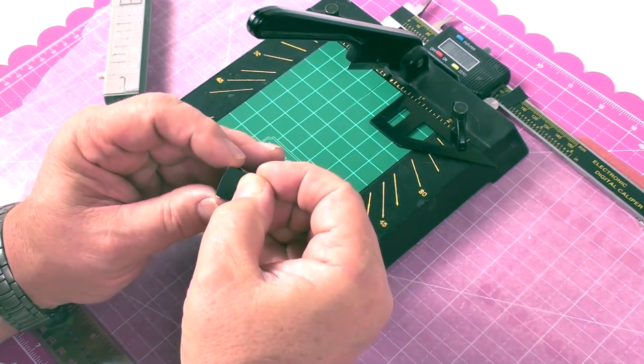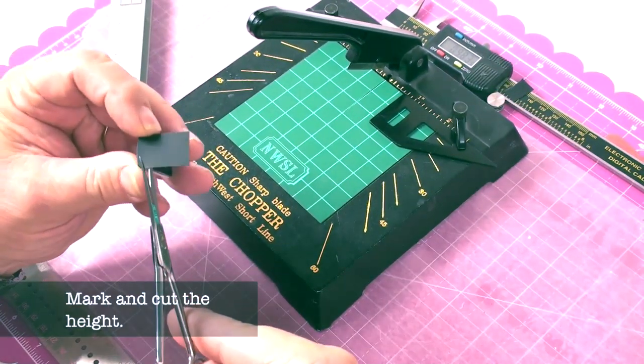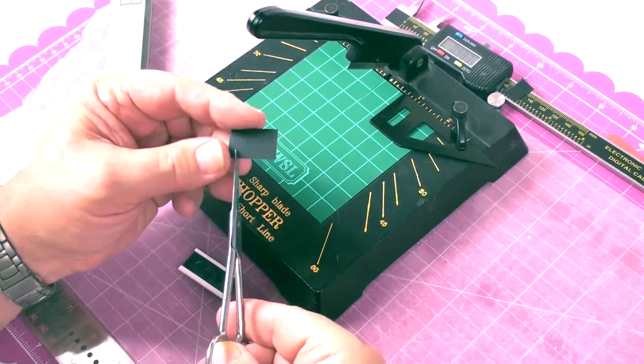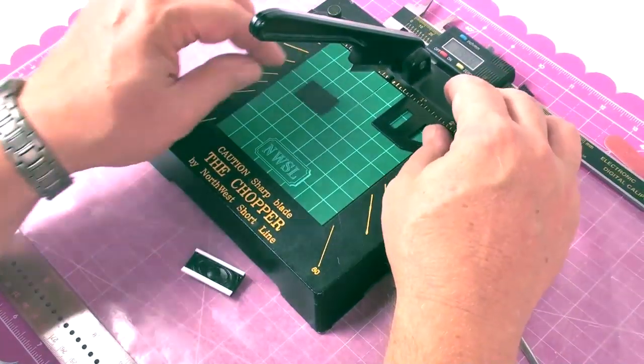We'll figure out just exactly how much we want to have protrude down there. Then use the scissors just to make a little mark, just a little nip in the plastic so we know how far it is.